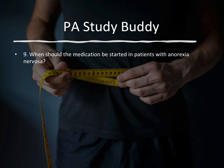Question nine: when should medication be started in a patient with anorexia nervosa? They'll give you different times — right away, a month after, once weight is restored. The answer is you should start medication only after the weight is restored.